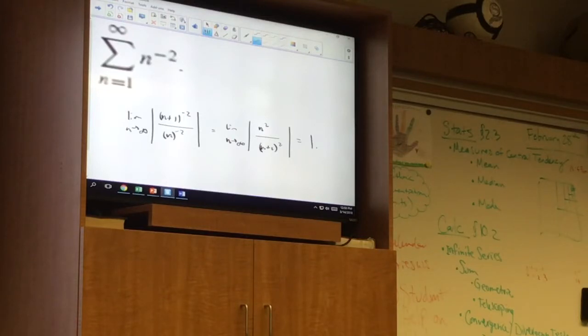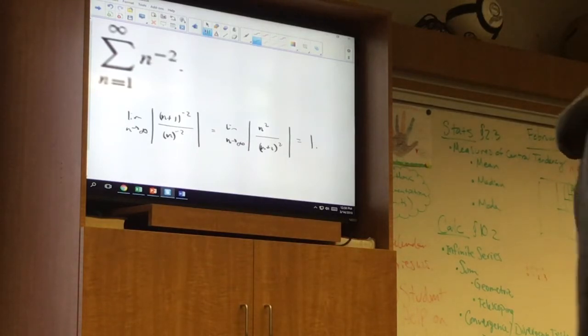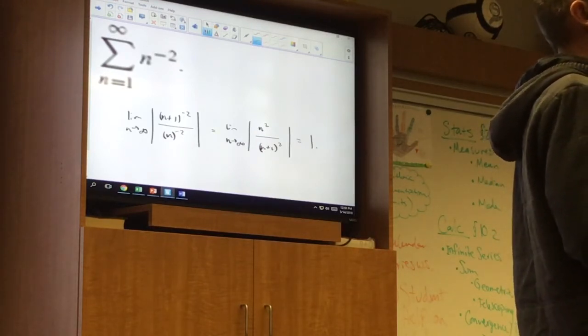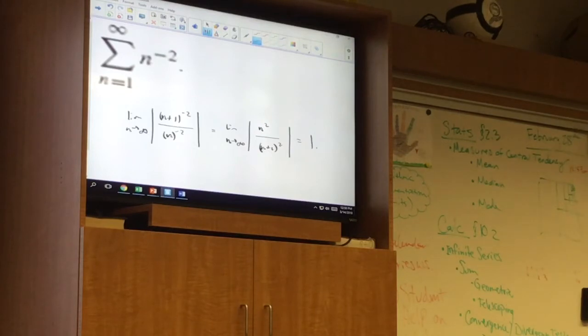Inconclusive, meaning you cannot use this test for this series. It doesn't mean that this series is difficult to evaluate, to determine whether it converges or diverges. In fact, we know that this guy converges because of the p series. But all that this tells us is you cannot use this test.